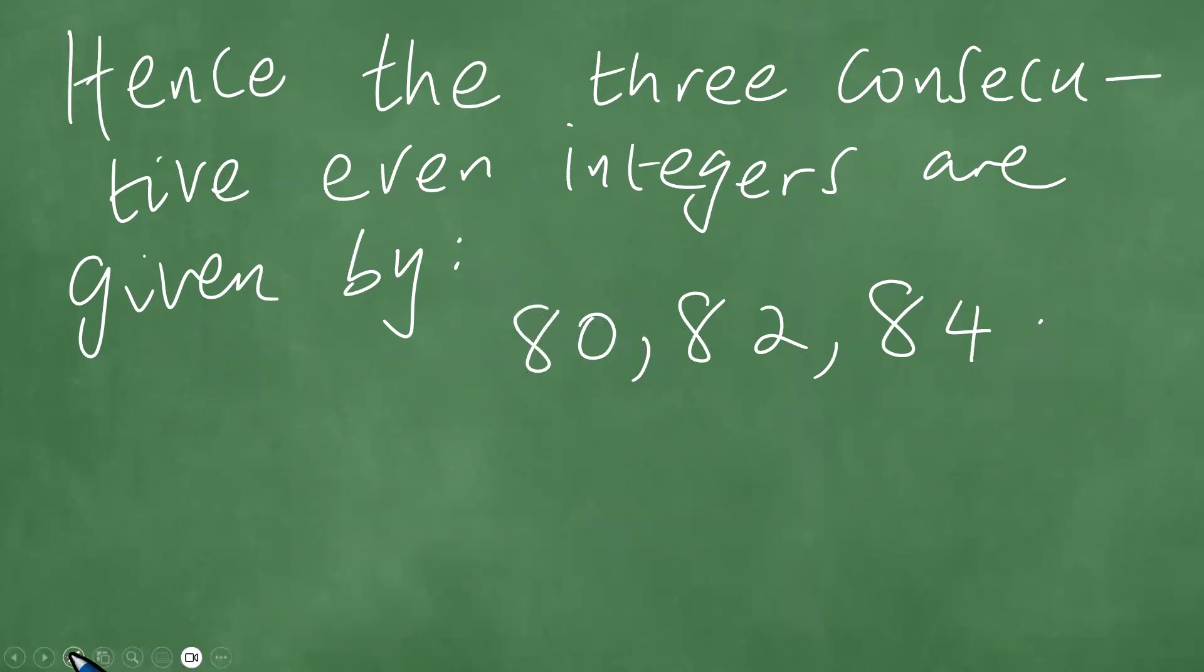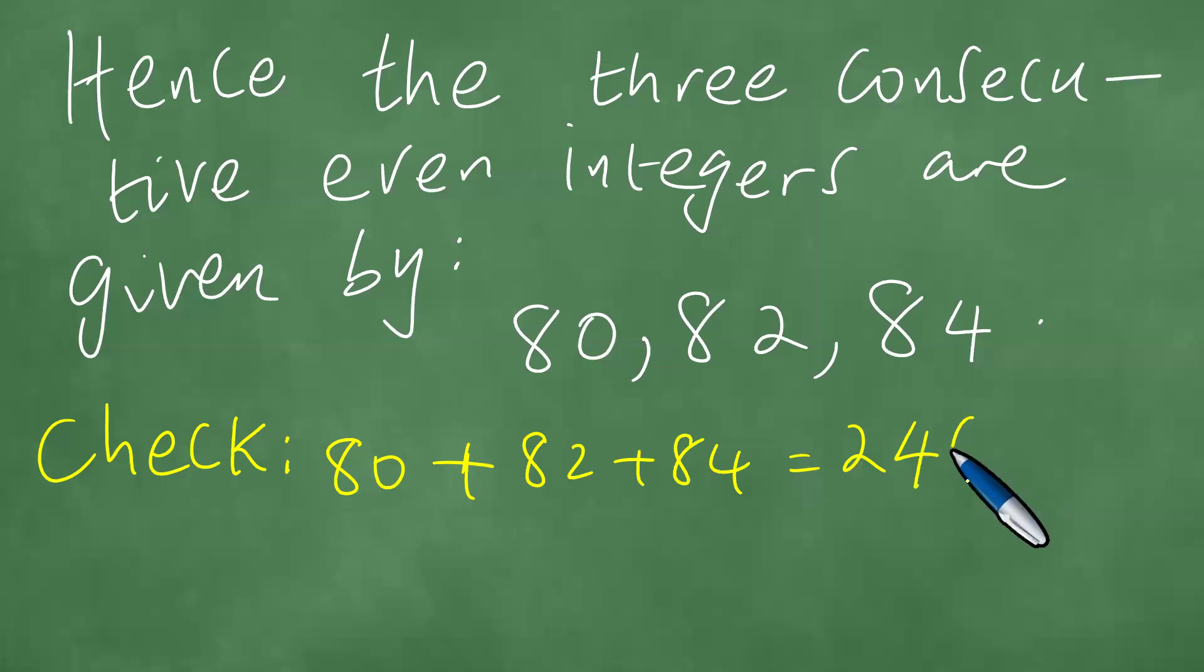Let's do a quick check. According to the quick check, if we find the summation, 80 plus 82 plus 84, 80 plus 80 plus 80 is 240, and it's 246 with the 2 and the 4. So 80 plus 82 plus 84 is actually 246.